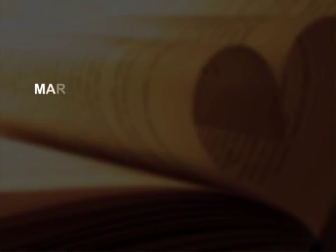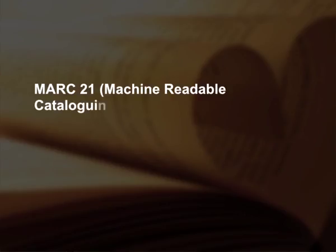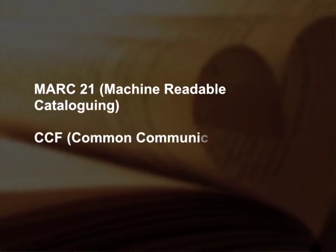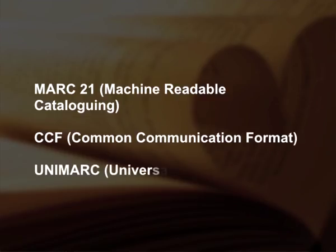Standardization and structuring of cataloging records are based on content designators such as MARC 21 (Machine Readable Cataloging), CCF (Common Communication Format), UNIMARC (Universal MARC), or other similar standards.